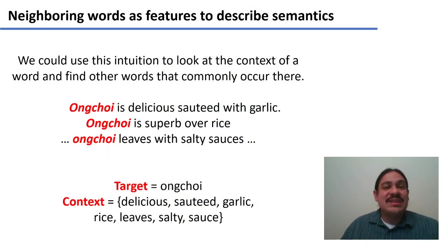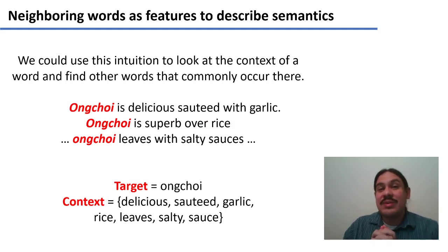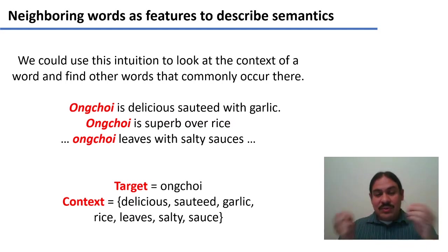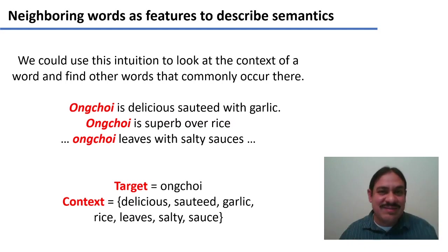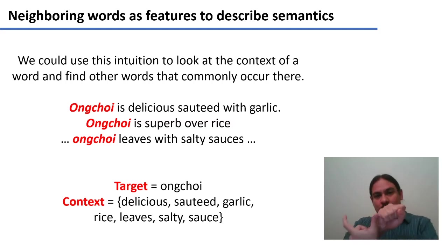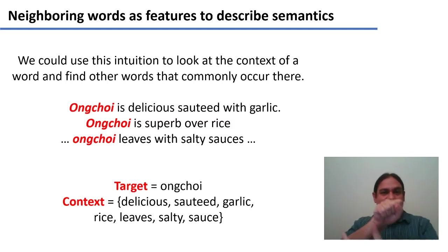Here, we had a target word that was Ong Choy, and we were trying to figure out what that target word means. We also have a context for the word — words that frequently co-occur with Ong Choy, where it says delicious, sautéed, garlic, and so forth. Maybe we don't know the target word, but we can describe it using its neighboring words, the words that occur before it or after it, in context.